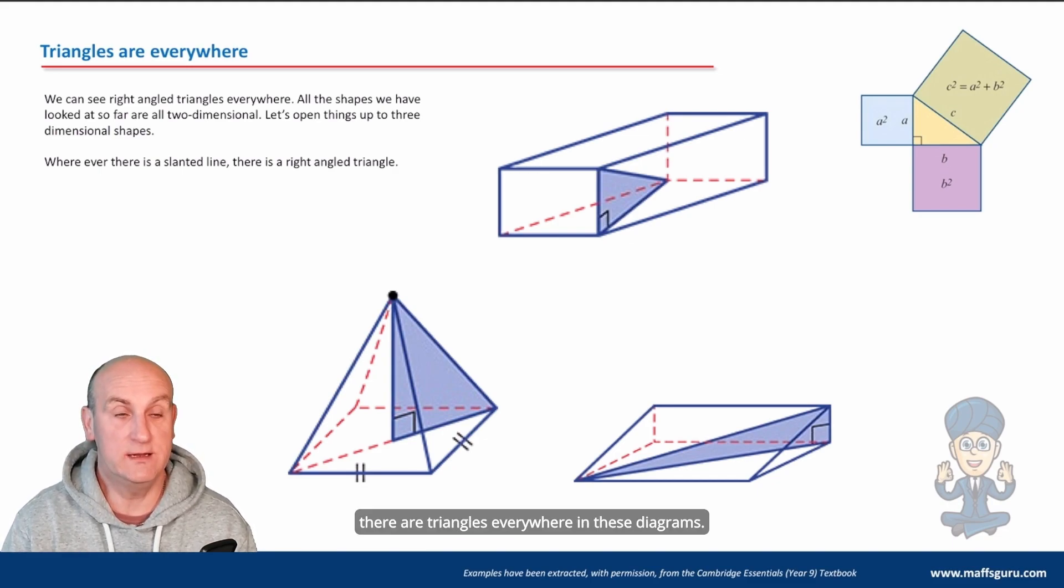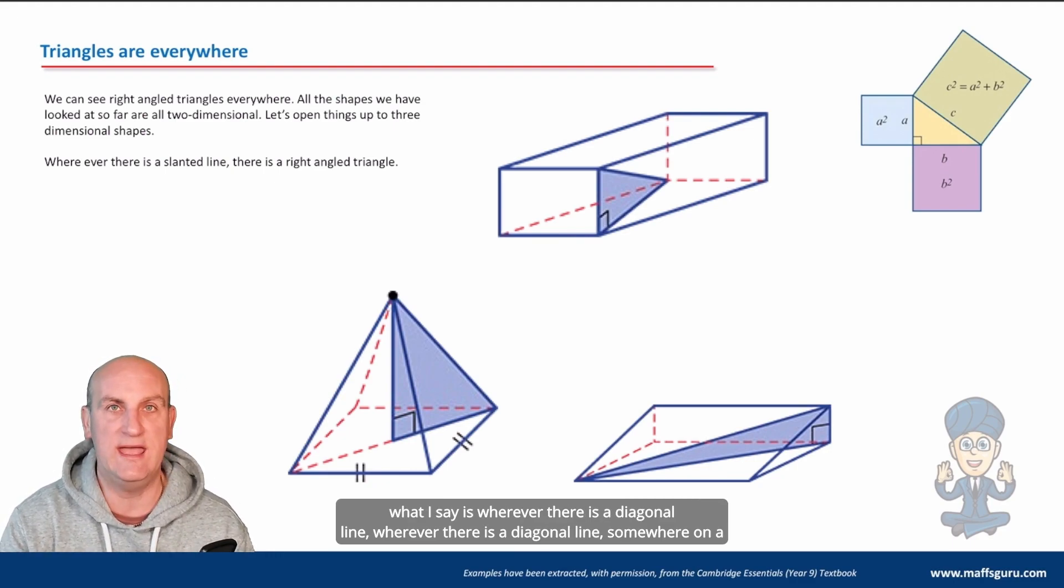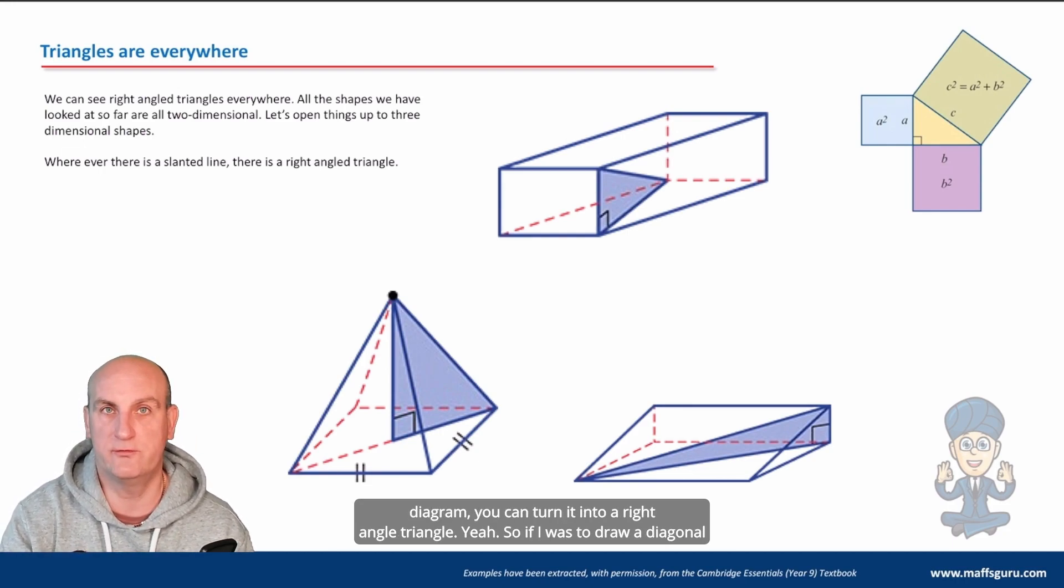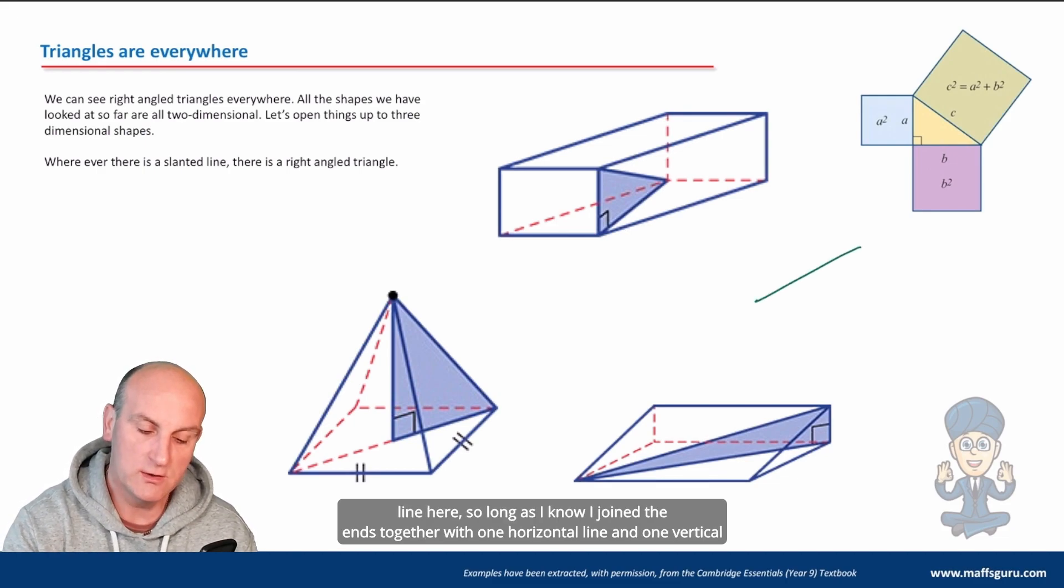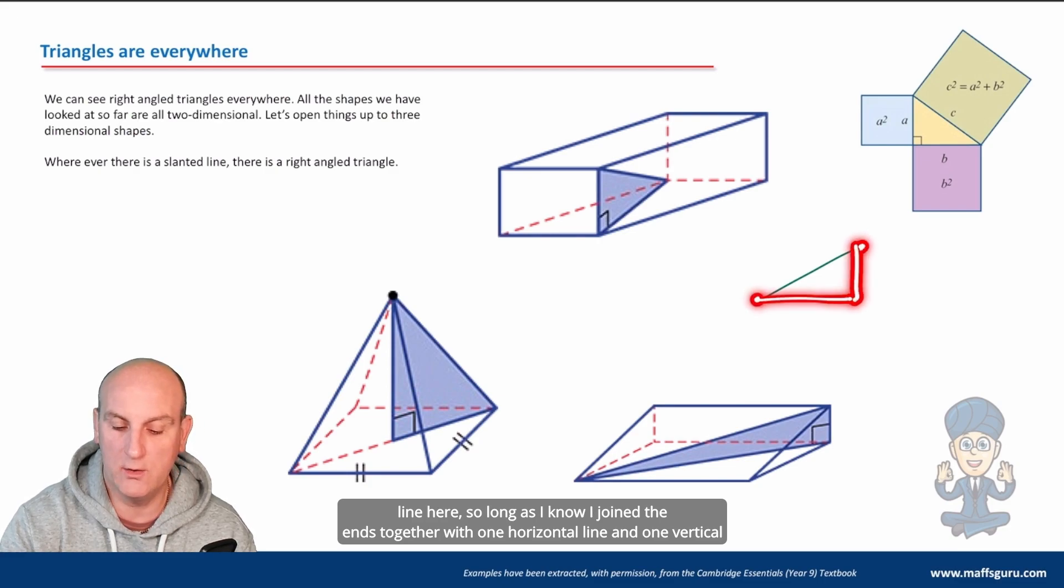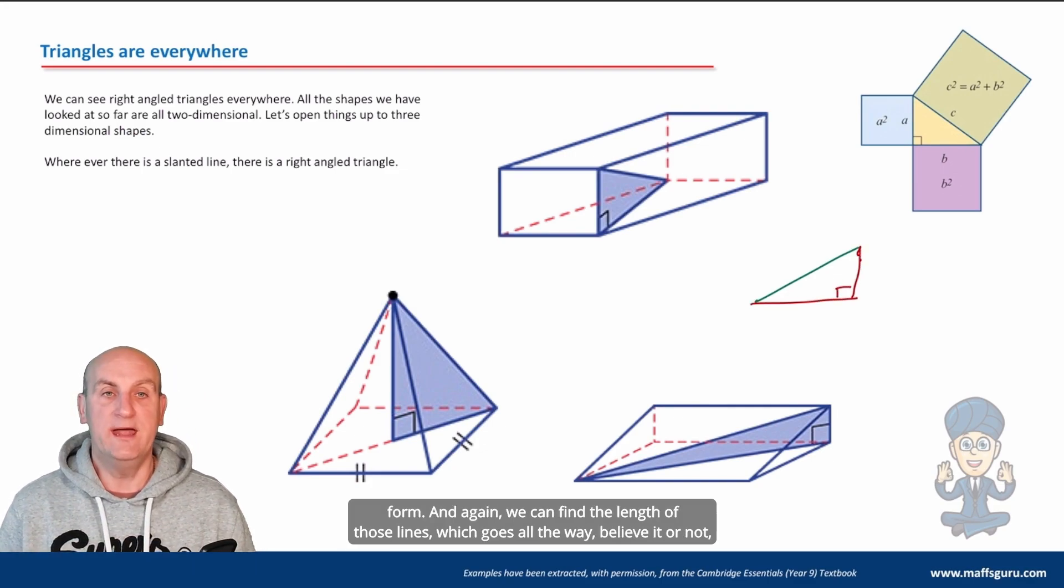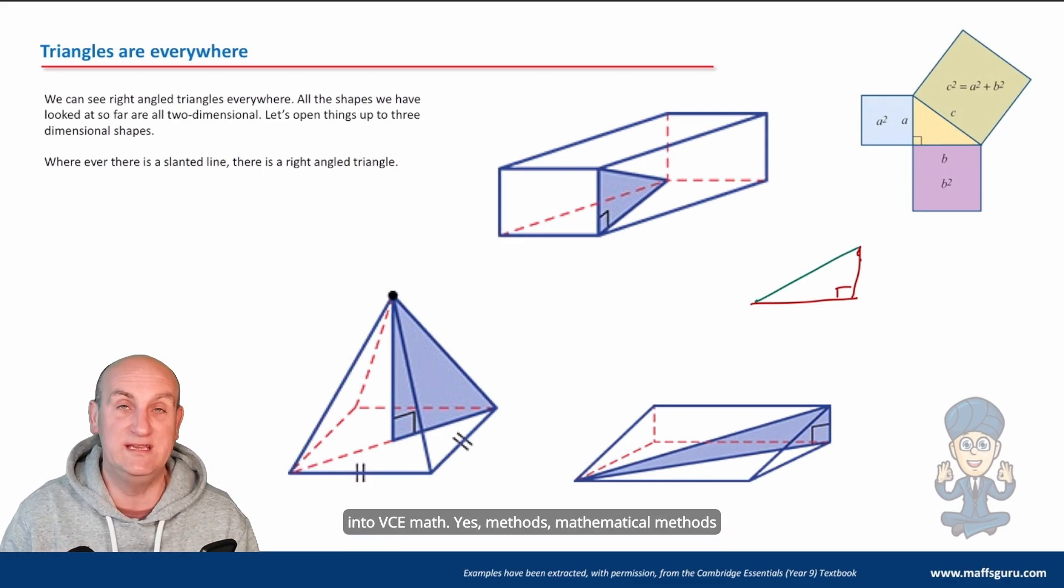But back to this there are triangles everywhere in these diagrams and what your job is is to try and find them. What I say is wherever there is a diagonal line on a diagram you can turn it into a right angle triangle. So if I was to draw a diagonal line here so long as I join the ends together with one horizontal line and one vertical line then basically I have a right angle triangle and we can find the length of those lines which goes all the way believe it or not into VCE.